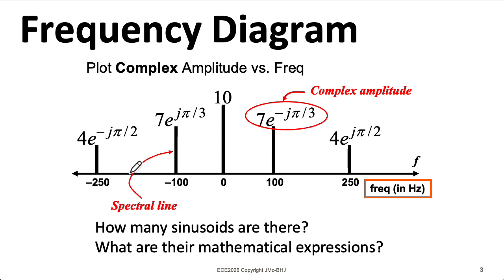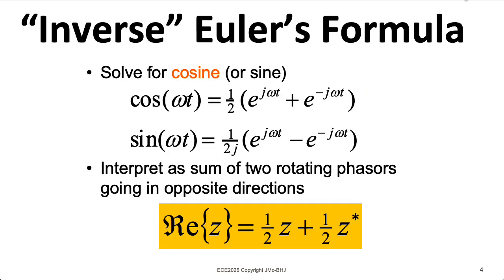To motivate this kind of diagram, let's recall our inverse Euler formula representations for cosine and sine. If we think about this e to the j omega t, that's a phasor rotating counterclockwise. And if we think about the e to the minus j omega t, that's a phasor rotating clockwise. So when you add those together, the imaginary parts wind up canceling, and if I divide it by 2, that gives me my cosine.